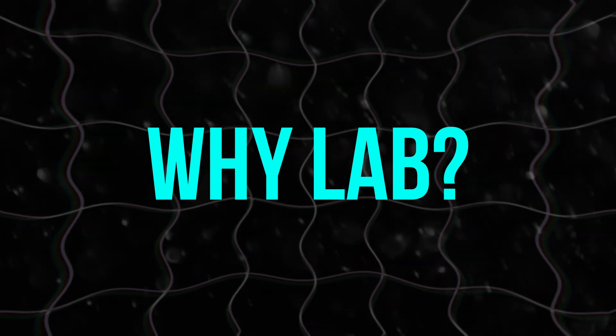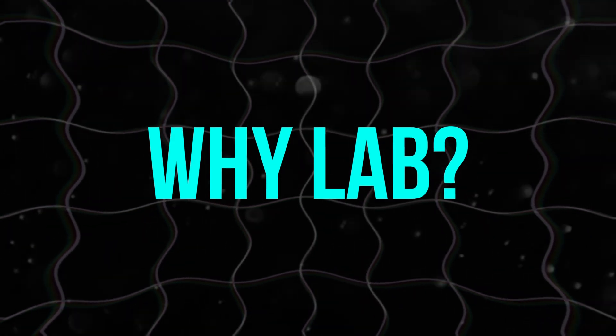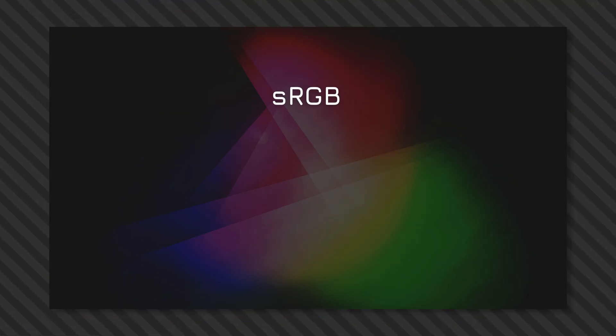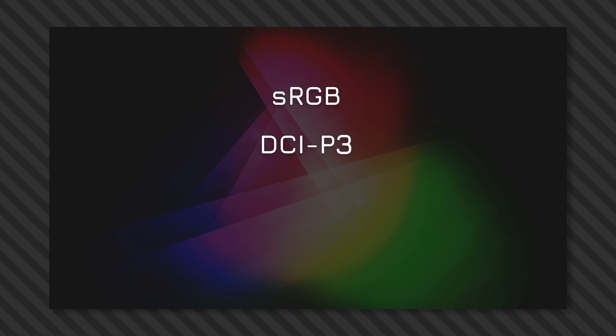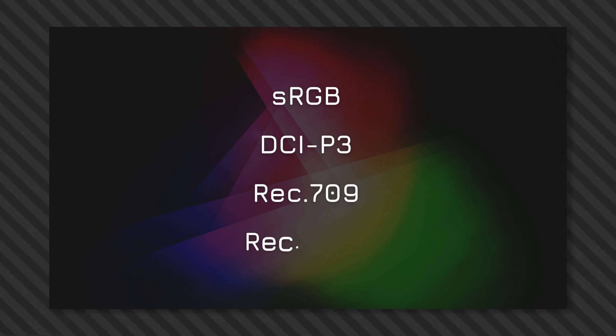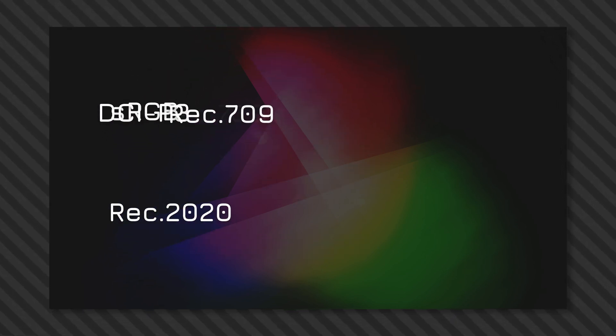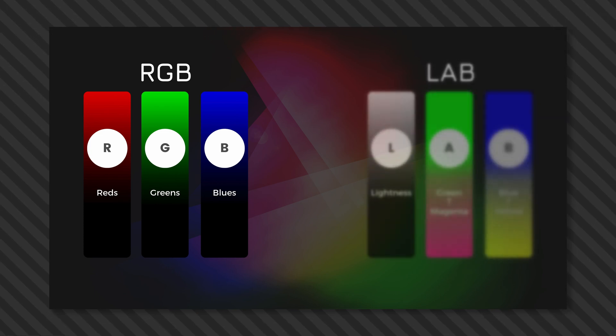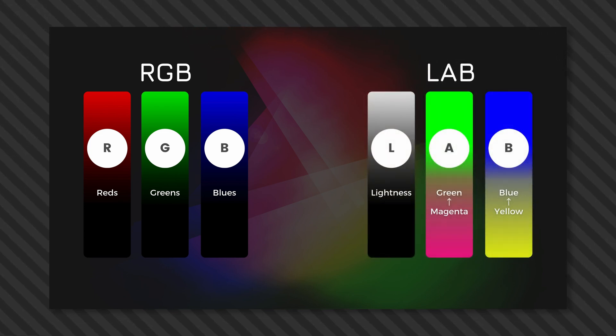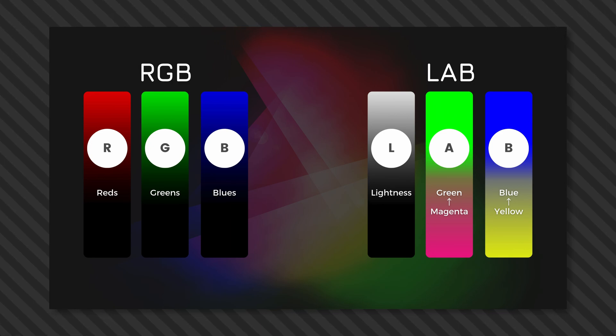So why is Lab that important for our goal? Color spaces like sRGB, DCI-P3, Rec.709, and Rec.2020 all use the standard RGB model, where the red channel is used for reds, blue for blues, and green for greens. Lab also has three channels, but they are L for lightness, A for the green-magenta component, and B for the blue-yellow component. This allows us to manipulate colors in unique ways.